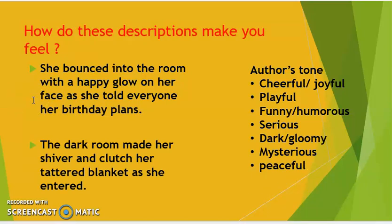The first description is: 'She bounced into the room with a happy glow on her face as she told everyone her birthday plans.' The words 'bounced' and 'happy glow' tell us how the person is feeling. We come to know that the person is feeling happy, she's cheerful and joyful. So the tone of this description is cheerful or joyful.